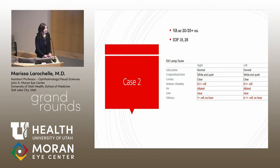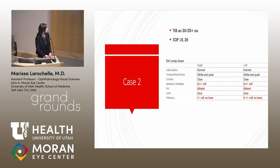On presentation, vision was good at 20/25 in both eyes, with a mildly elevated intraocular pressure in the left eye, possibly from the topical steroids. He still had some mild anterior chamber inflammation despite QID prednisolone, and mild vitritis.